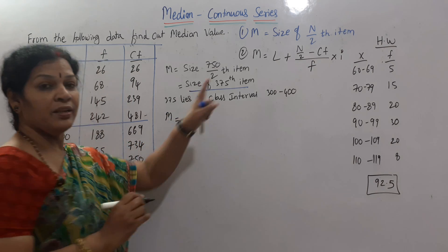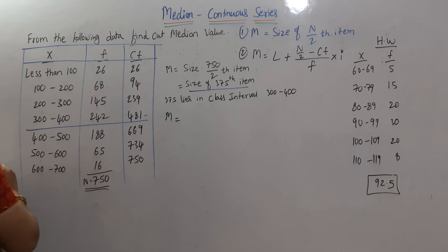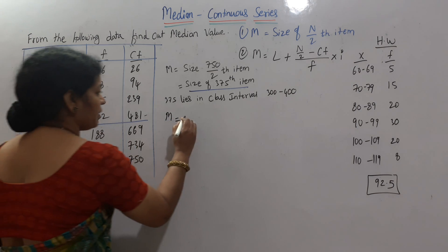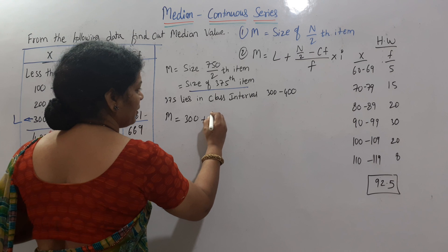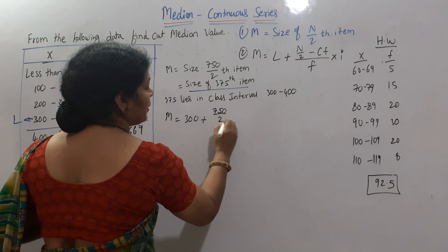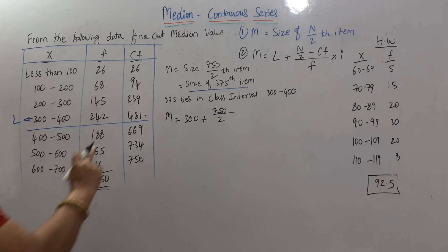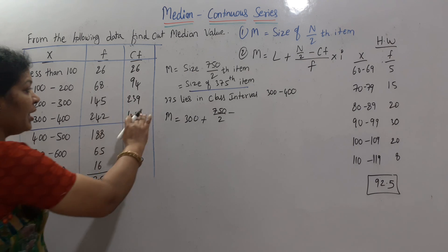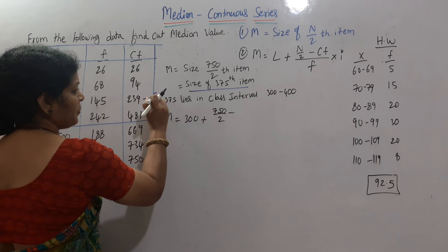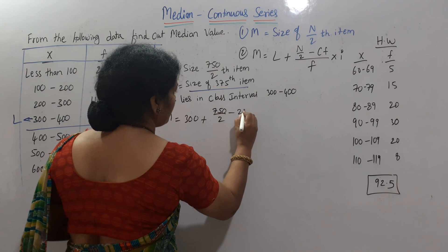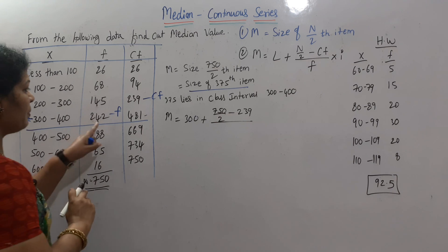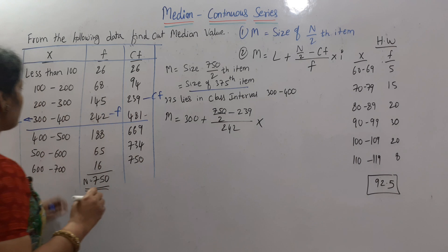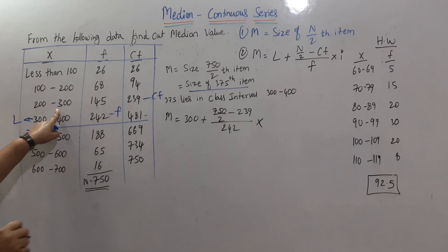Now apply the second formula: Median = L + (n/2 − CF) / f × i. Here, L is the lower class interval of the median class, which is 300. n/2 = 375. CF is the cumulative frequency of the class above the median class, which is 239. f is the frequency of the median class, which is 242. i is the class width — the difference between any class boundaries — which is 100.